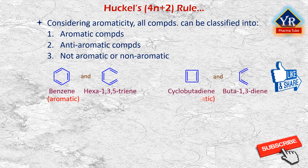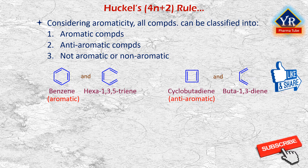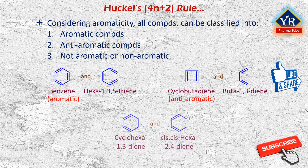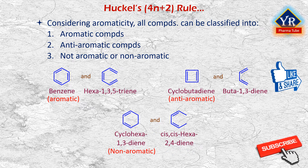An anti-aromatic compound is less stable than an acyclic compound having the same number of pi electrons. For example, cyclobutadiene is less stable than buta-1,3-diene. A compound that is not aromatic is similar in stability to an acyclic compound having the same number of pi electrons. For example, cyclohexa-1,3,5-triene is similar in stability to cis,cis-hexa-2,4,5-triene, so it is not aromatic.